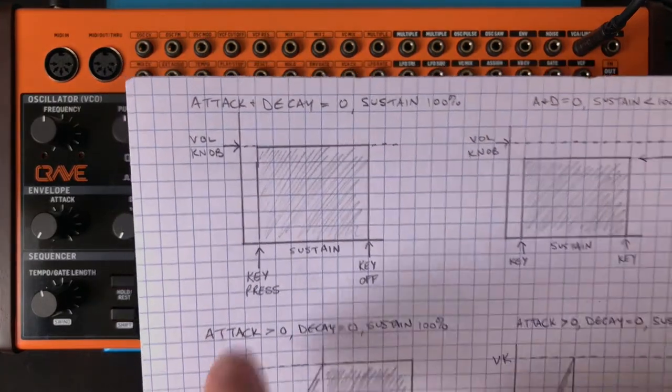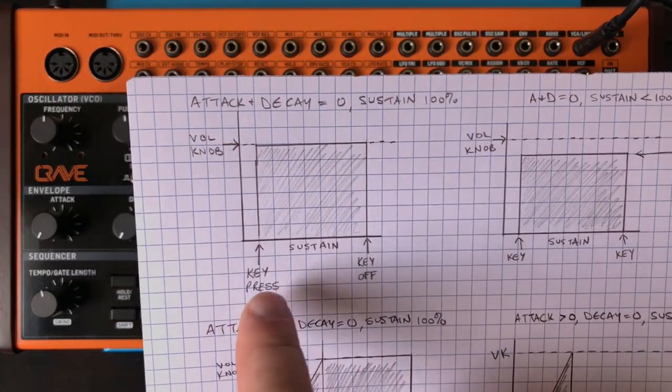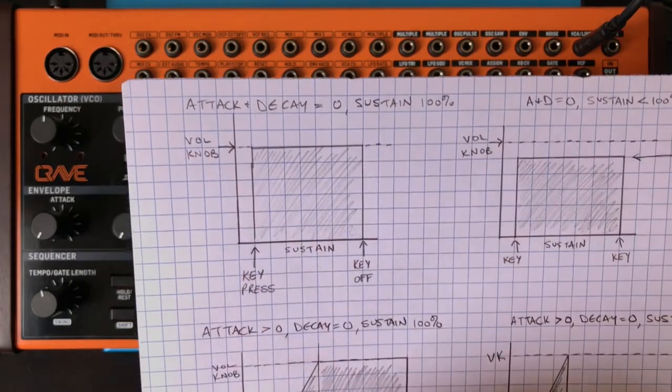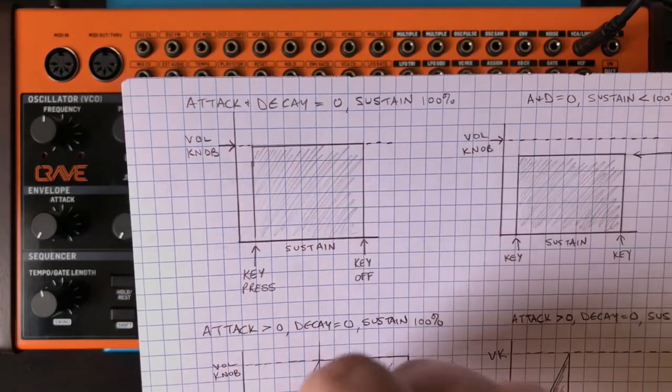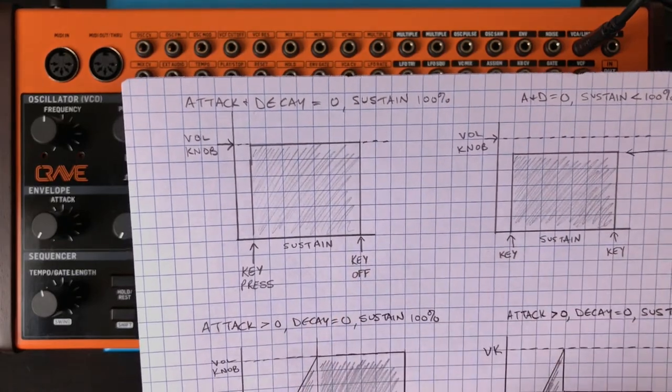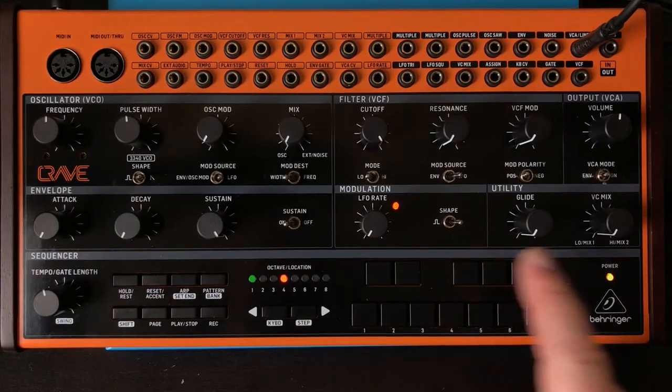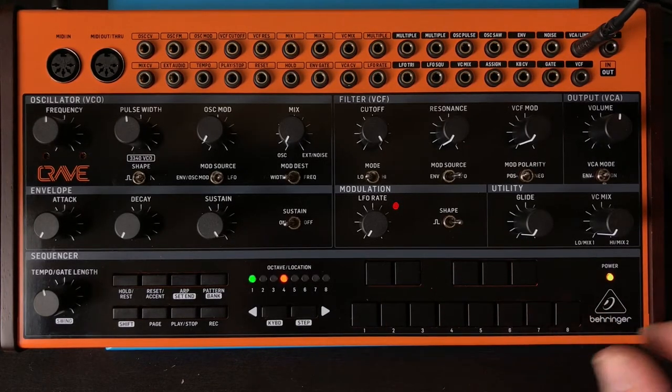So what's going to happen is, the attack is at zero, so that when I press the key, the sound instantly jumps up to the maximum volume, it stays there, and then when I let go, it immediately shuts off. Sounds like this. Thrilling.